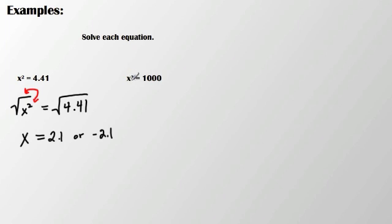Same thing if I have x cubed equals 1,000, and I need to solve. I'm going to take the cube root of x cubed, so I need to take the cube root of 1,000. What number times itself 3 times equals 1,000? In this case, x equals 10.